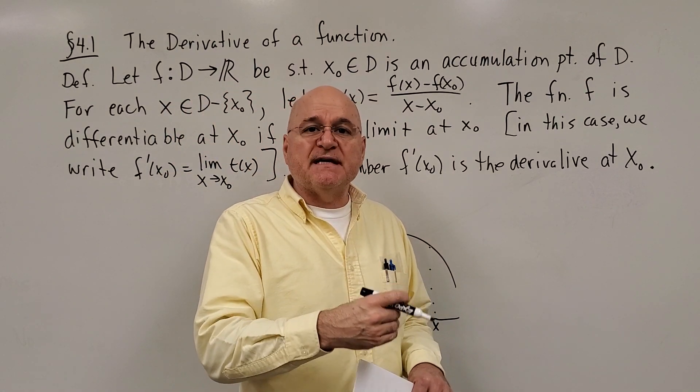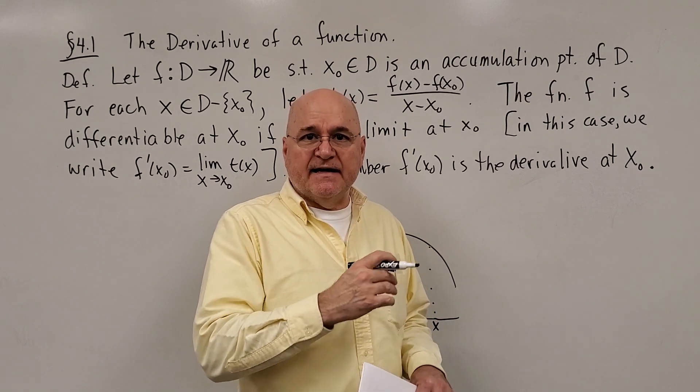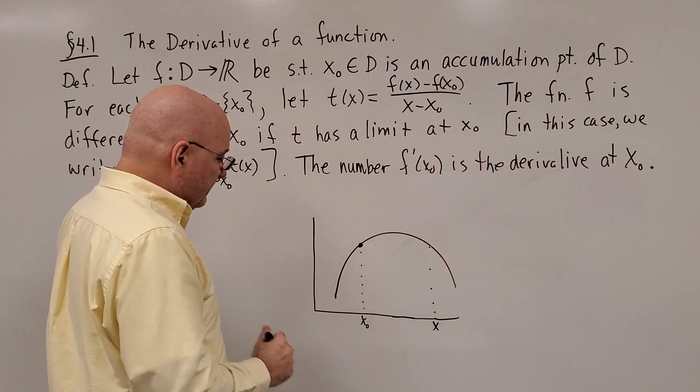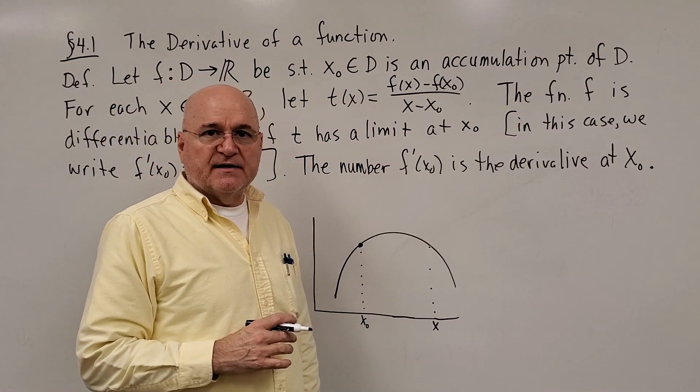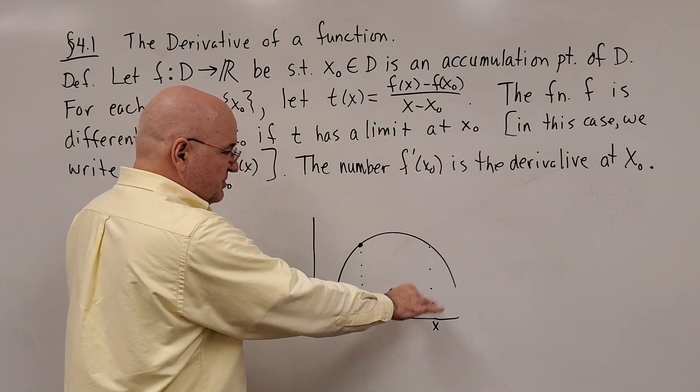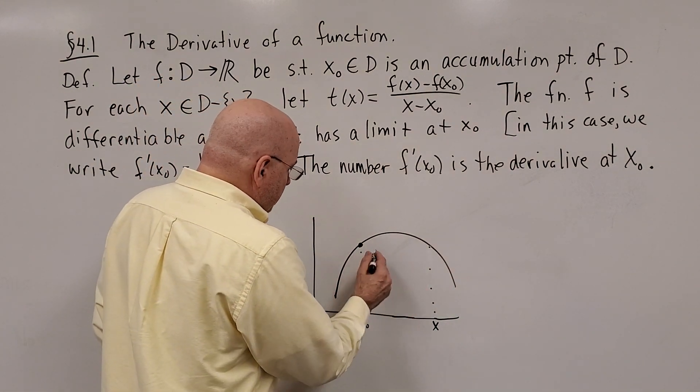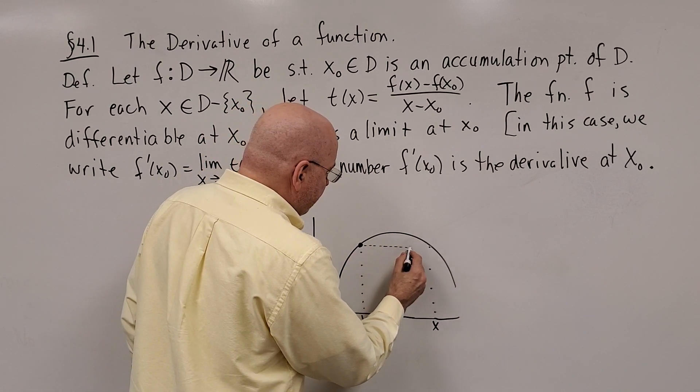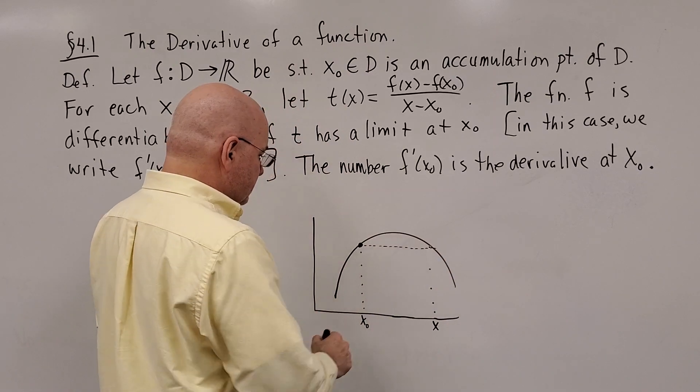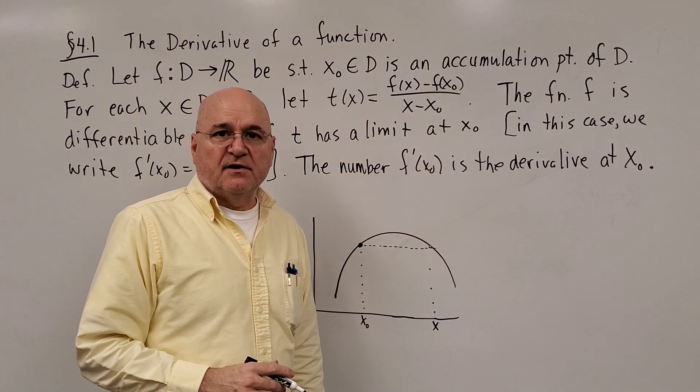On the graph at that x value, let's say x naught is the point in question that we're trying to look at the derivative, and x is just some other arbitrary point out there. If I were to connect the two function values at x naught and x, that basically gives me a line.